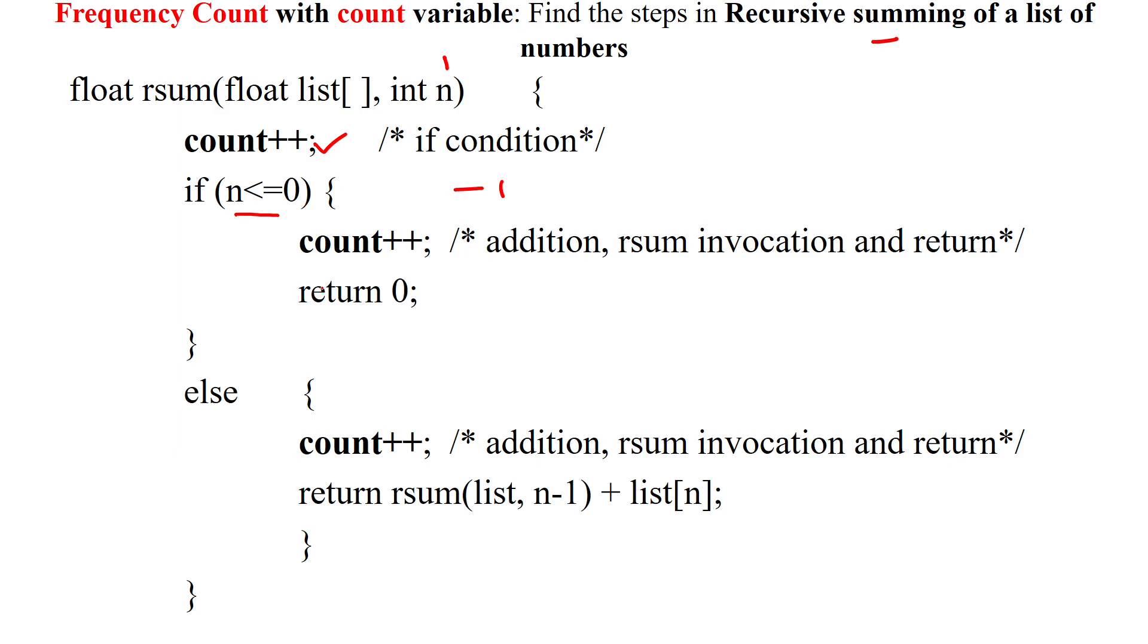Then here the false statement will execute, so the return statement which is consuming 1 unit of time. Now here again, it is calling the method itself. So here n value is 1, so 1 minus 1 is 0. So now 0 is passed in rsum of list comma 0.